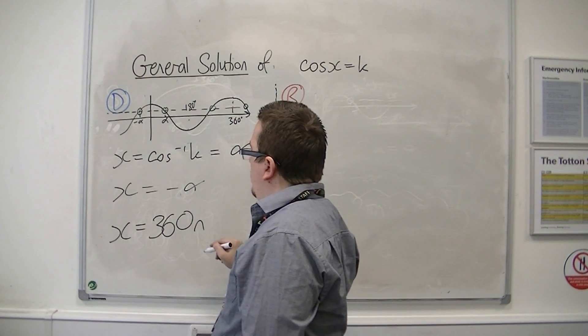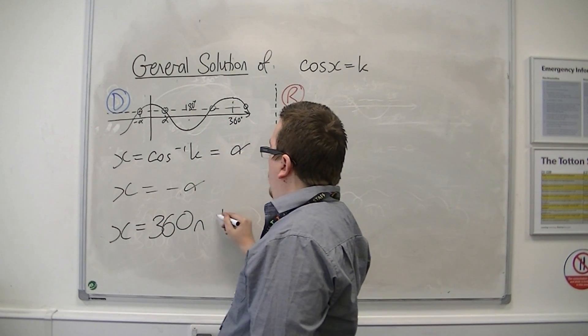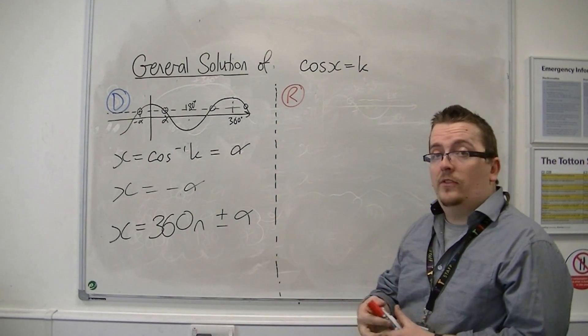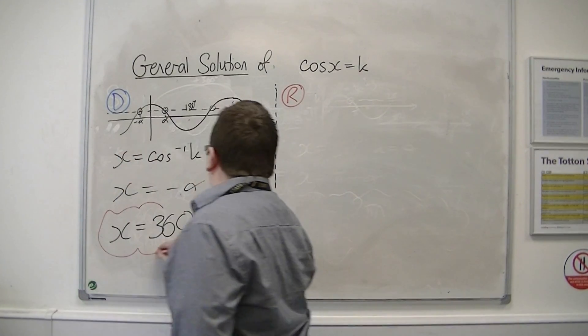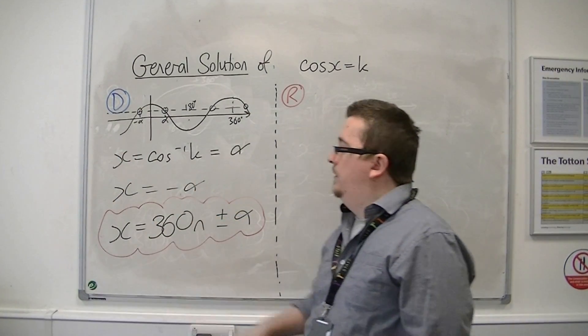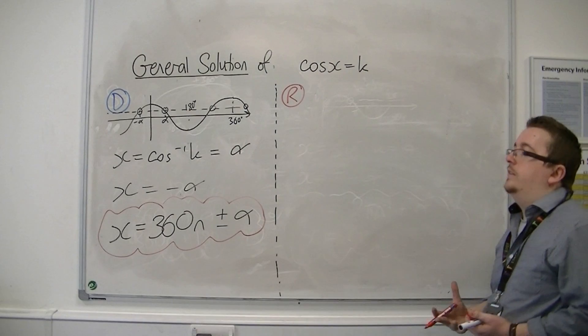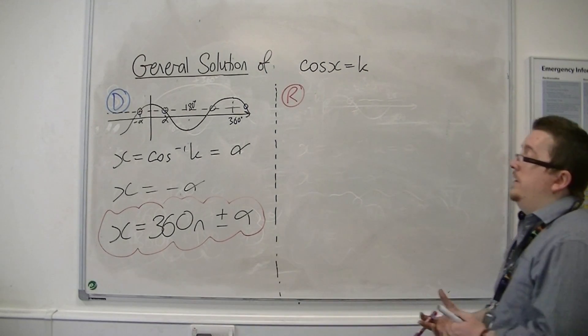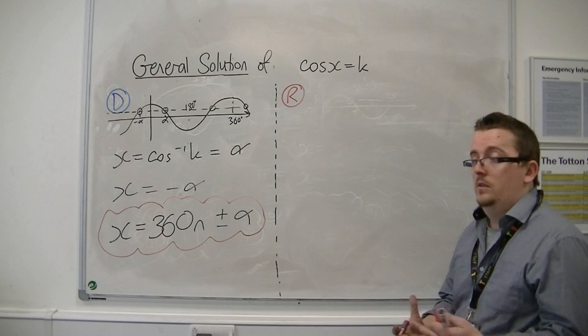So 360n, and I've got the two possible solutions, plus or minus alpha. And this one equation is all I need. Nice and succinct. Sine requires two equations. Cosine, you can write it as one, which is great.